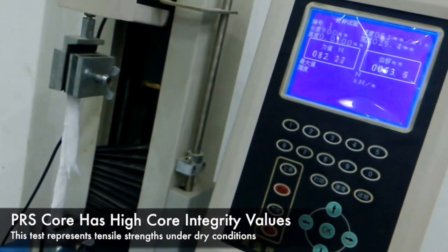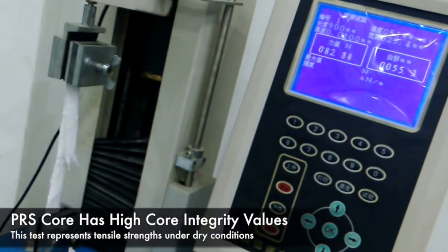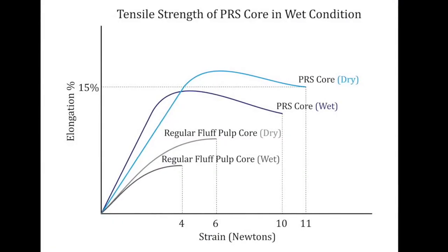Here you can see tensile strengths on Galaxy's cores. This graph shows the vastly improved core integrity under wet conditions compared to regular fluff pulp constructed cores.